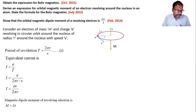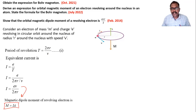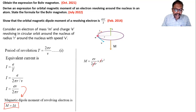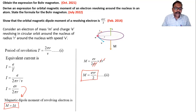The magnetic dipole moment is given by M = current × area. Substituting I = ev/(2πr) and area = πr² (since the electron revolves in a circular orbit), we get M = ev/(2πr) × πr². The π's cancel and one r cancels, giving M = evr/2. This is the expression for magnetic dipole moment.